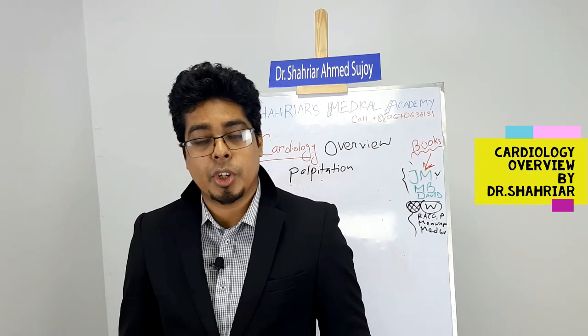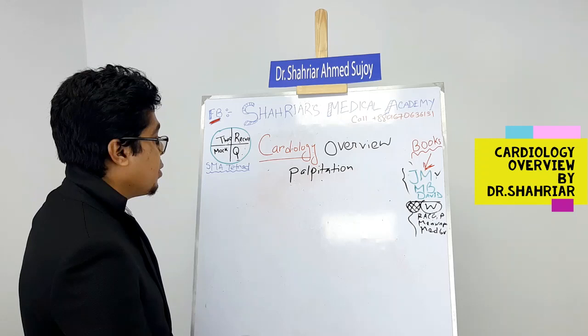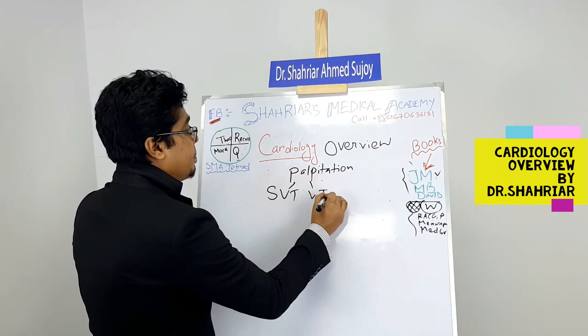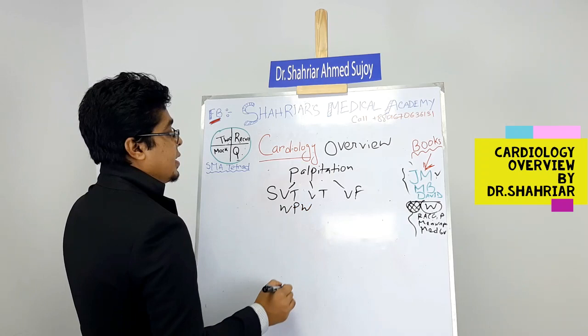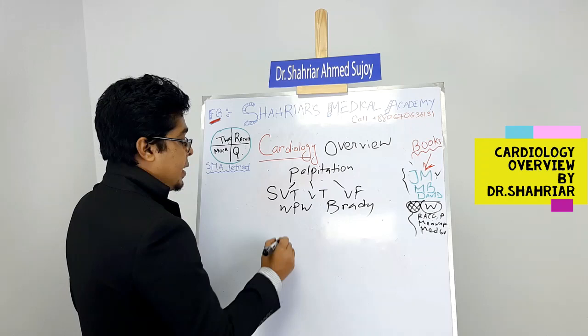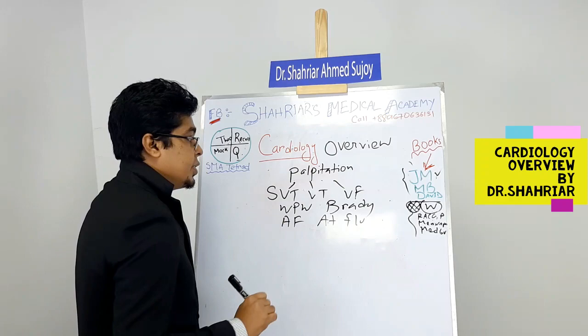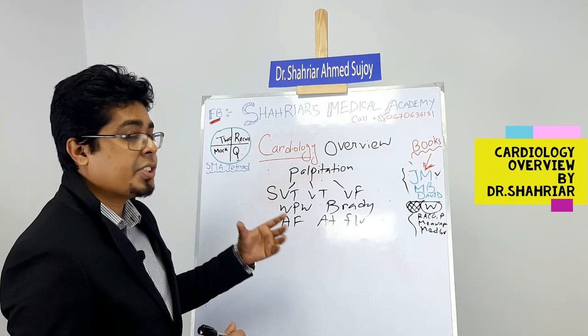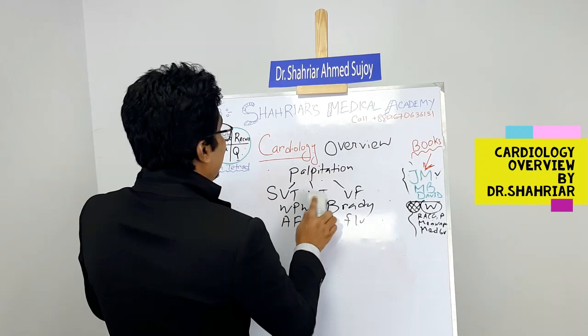This covers the palpitation-related topics — it's a whole chapter in John Murtagh. From palpitation, learn SVT, VT, ventricular fibrillation, Wolff-Parkinson-White syndrome, bradycardia, atrial fibrillation, and atrial flutter — including the ECG findings, clinical features, and management.